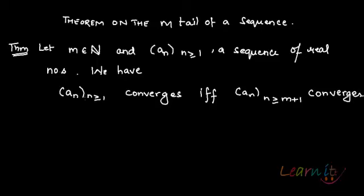This is a theorem on the m-tail of a sequence. An m-tail of a sequence has elements a_{m+1}, a_{m+2}, and so on — starting with a_n where n is greater than or equal to m+1. That is what is called an m-tail.